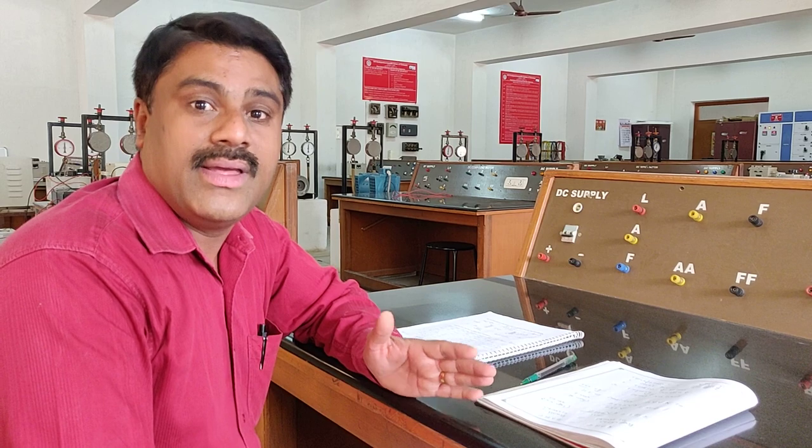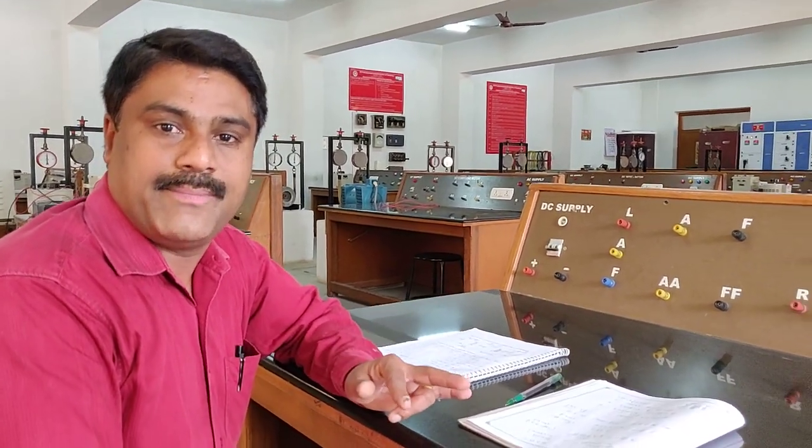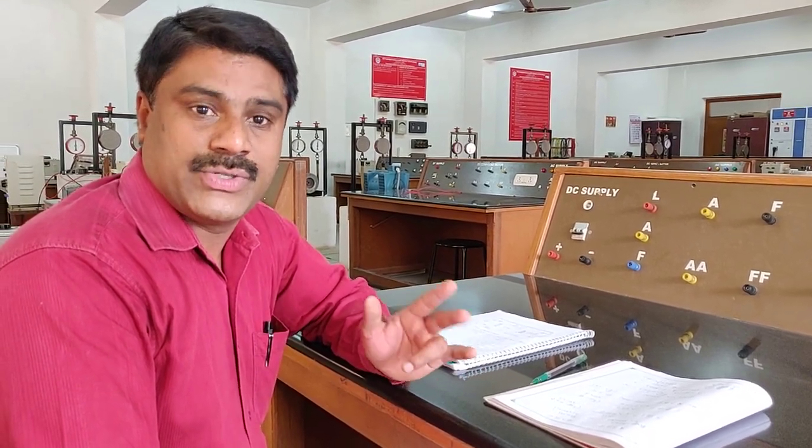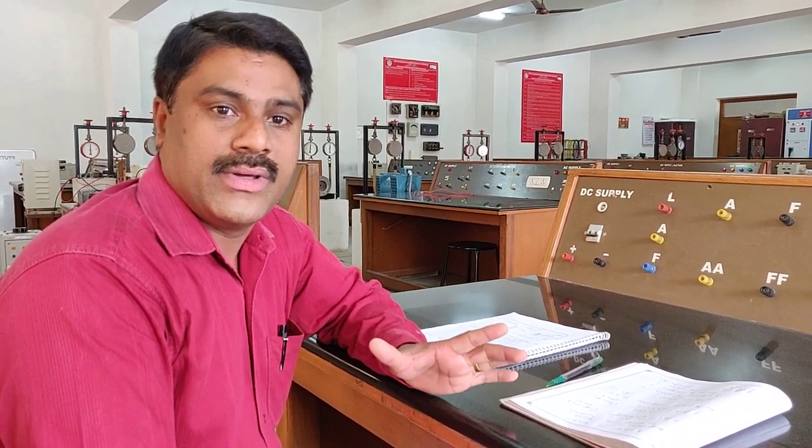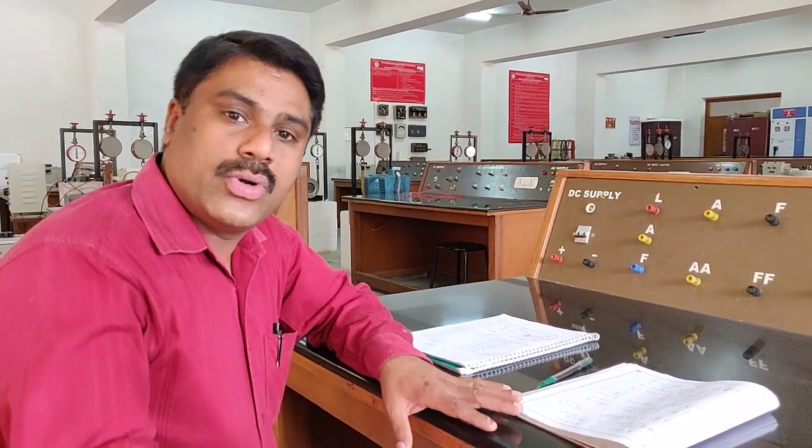Say for example, 11 kV by 400 volt where 11 kV will be in the primary side, the HV side, and 400 voltage which is a three phase voltage will be given for the distribution purposes as 400 volt. This is connected as a load terminal.